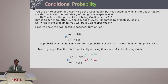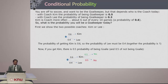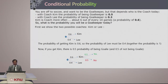Here is a real-time example. You are going to soccer and want to be a goalkeeper, but that depends on who the coach is today. With Coach Kim, the probability of being goalkeeper is 0.5; with Coach Lee, the probability is 0.3. Kim is coach more often — about 6 out of every 10 games, that is a probability of 0.6. What is the probability that you will be a goalkeeper today?